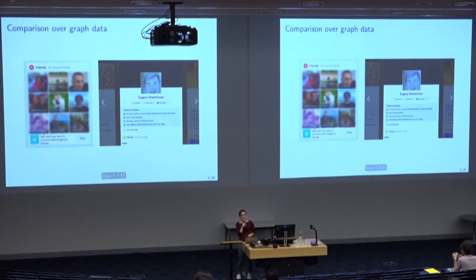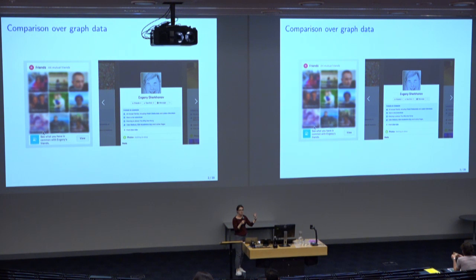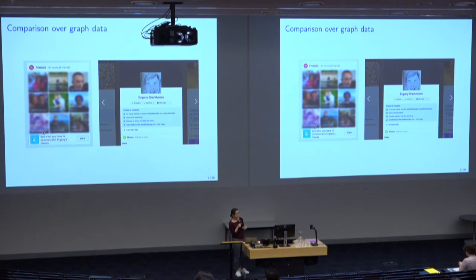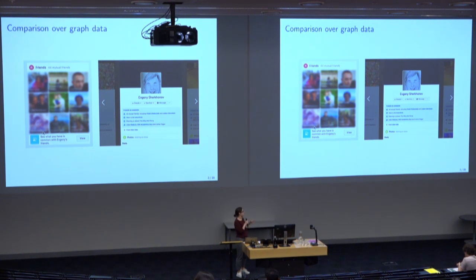For instance, on Facebook, you can compare yourself with a profile of another person, and you get a summary of what you have in common: common friends, common likes, events, and maybe you share the same university or current city. Still, this looks like comparison done over a predefined set of properties, and it doesn't go beyond the information immediately available in your profile.